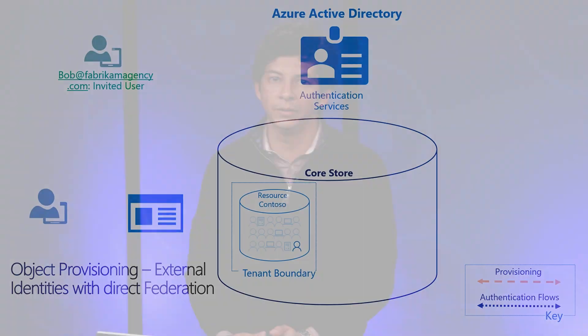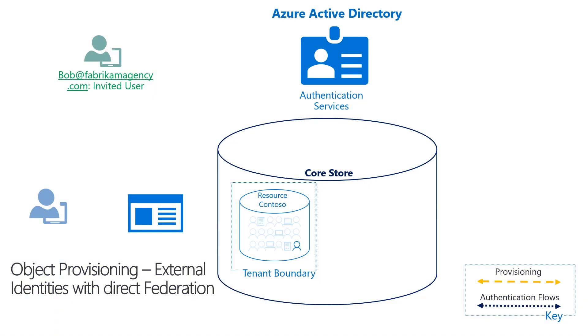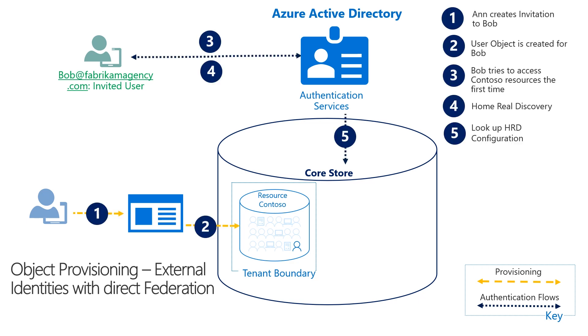In the next diagram, we have external identity provisioning with direct federation. This is a good fit for cases where Contoso needs to collaborate with an organization that doesn't have an Azure AD tenant, but may have a federation service that supports SAML or WS-Federation protocols. For this example, Bob is now at fabricantagency.com — a company that doesn't have an Azure AD tenant but has an ADFS. The information about the federation service, the certificates, and the domain has to be configured ahead of time by the Contoso administrator. The first five steps of the flow are identical to the previous ones.